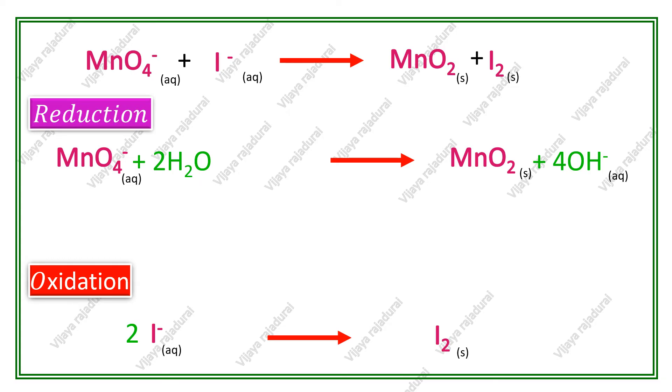Next, we have to balance the number of charges on both reactant and product side. In reduction reaction, manganese is minus 1, water molecule is 0. On product side, MnO2 is a molecule so it is 0, and 4 hydroxyl ions give 4 negative charges. So, the net charges are minus 1 on reactant and minus 4 on product side.